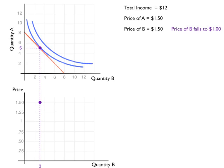So if the price of B falls to $1, we see the budget curve rotate out like that, and the consumer now consumes at a new point. At this point, they'll consume 4 units of A and 6 units of B.